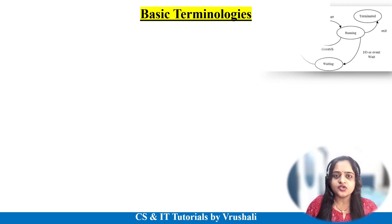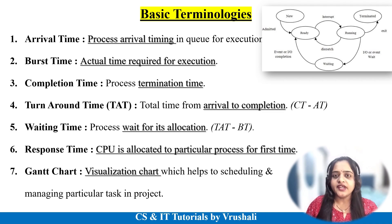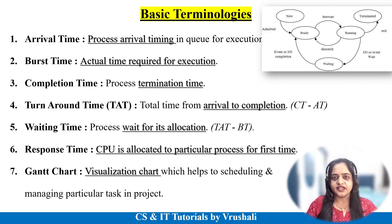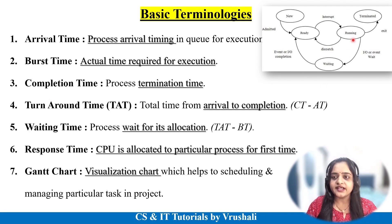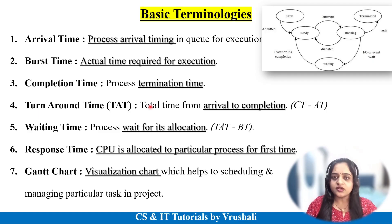Before solving an example, you must know about some basic terminologies. The first is arrival time: when a process is created in the new state and goes to the ready state for execution, that is called the arrival time of a particular process. Next is burst time: the actual time required for the execution of a particular process. Next is completion time: when a process completes its execution and goes to the terminated state. Then turnaround time: the total time from arrival to completion, which is called turnaround time.